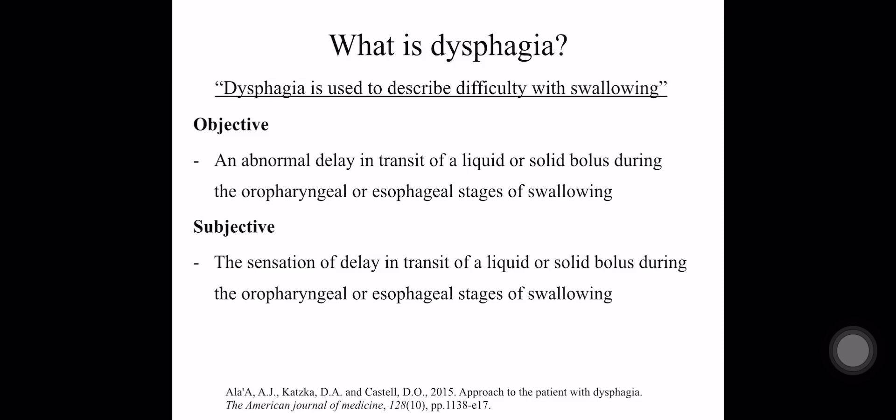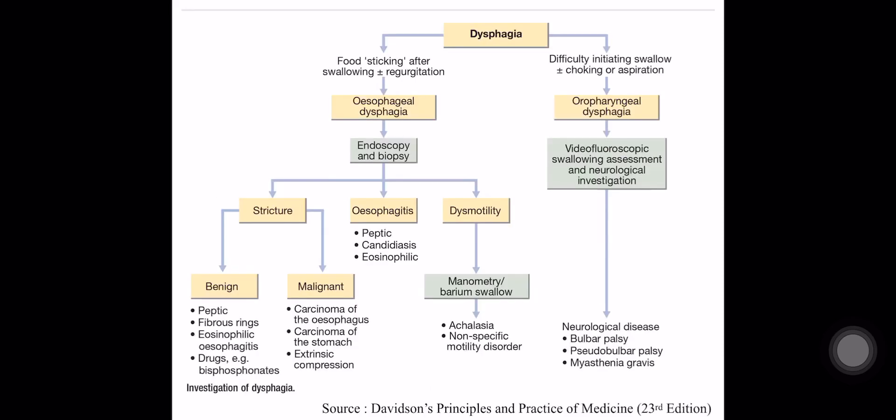It has two types of definitions: objective definition and subjective definition. Objective dysphagia means it is an abnormal delay in the transit of a liquid or solid bolus during the oropharyngeal or esophageal stages of swallowing. Subjective dysphagia means it is a sensation of delay in the transit of a liquid or solid bolus during the oropharyngeal or esophageal stages of swallowing.